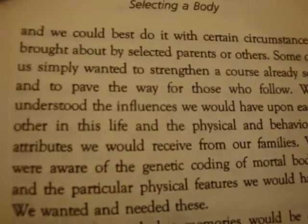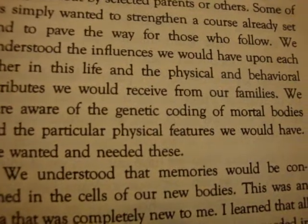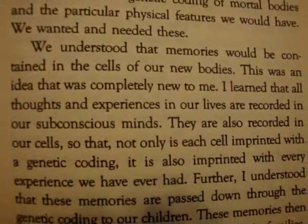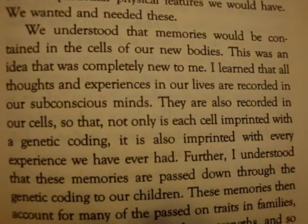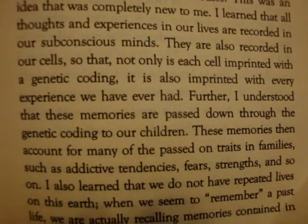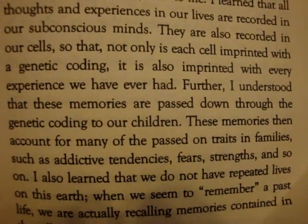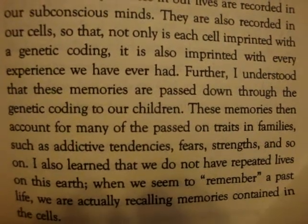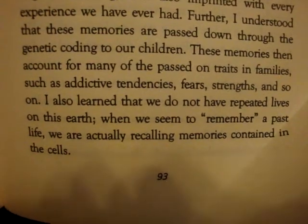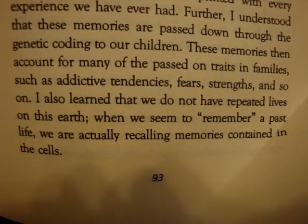We understood the influences we would have upon each other in this life and the physical and behavioral attributes we would receive from our families. We were aware of the genetic coding of mortal bodies and the particular physical features we would have. We understood that memories would be contained in the cells of our new bodies. I learned that all thoughts and experiences in our lives are recorded in our subconscious minds. They are also recorded in our cells, so that not only is each cell imprinted with a genetic coding, it is also imprinted with every experience we have ever had. These memories are passed down through the genetic coding to our children, accounting for many passed-on traits in families such as addictive tendencies, fears, and strengths. I also learned that we do not have repeated lives on this earth. When we seem to remember a past life, we are actually recalling memories contained in the cells.